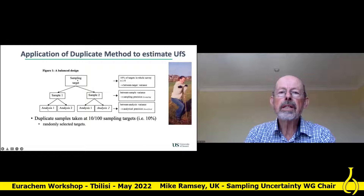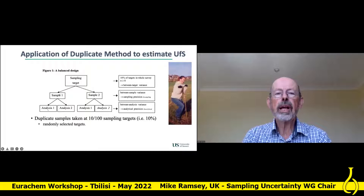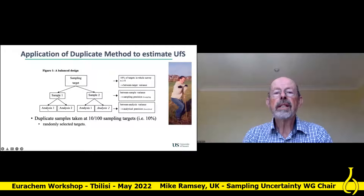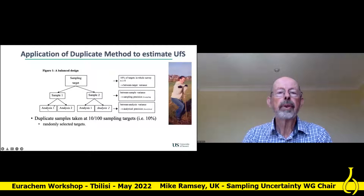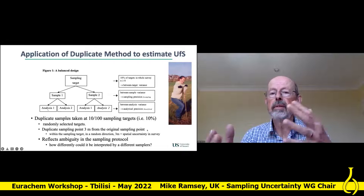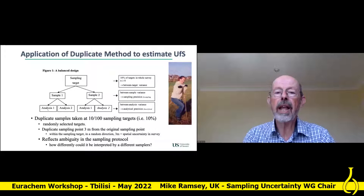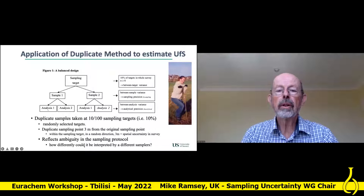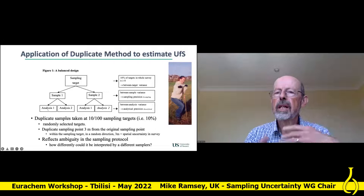The duplicate method means that at 10% of the targets — at least eight — you don't just take one sample; you reinterpret the protocol to take a second sample. This difference gives us some idea of the sampling repeatability that feeds into the sampling uncertainty. To separate out the analytical sources, we take analytical duplicates on both samples, and we select the targets at random. The distance between the sample duplicates in this survey was three metres, because our surveying technology — tapes and lines — couldn't relocate ourselves better than that, reflecting the ambiguity in the sampling protocol.